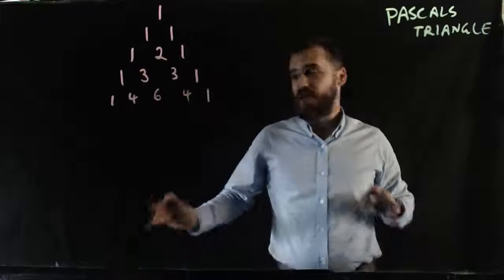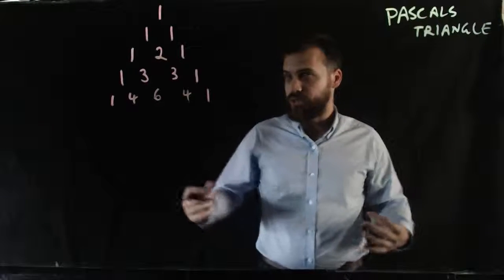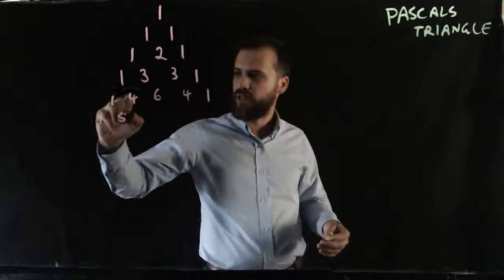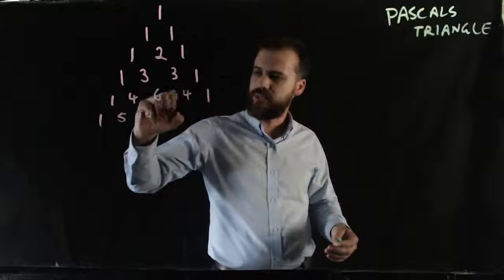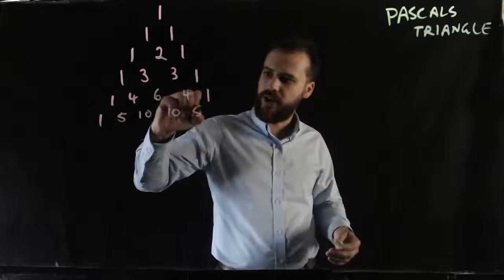Pascal's Triangle goes on forever and ever following this pattern. 1 on the edge, 1 plus 4 is 5, 4 plus 6 is 10, 6 plus 4 is 10, 4 plus 1 is 5, and 1.